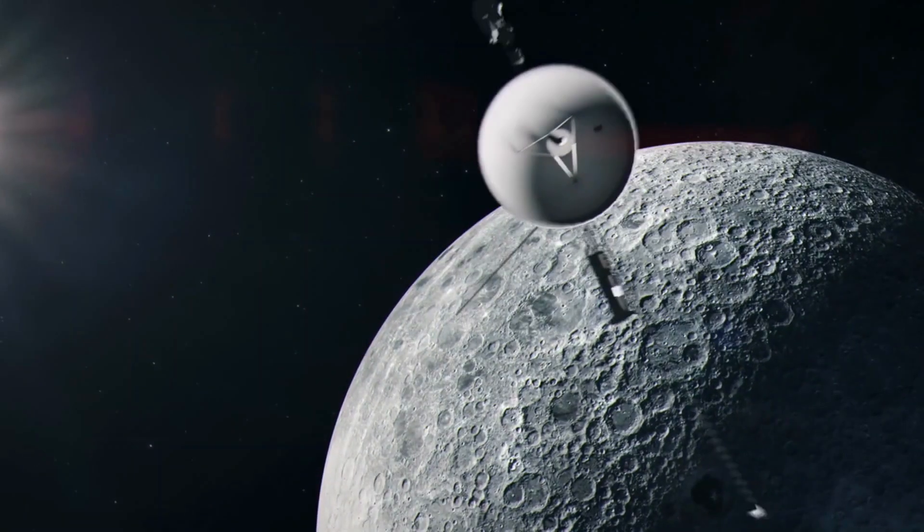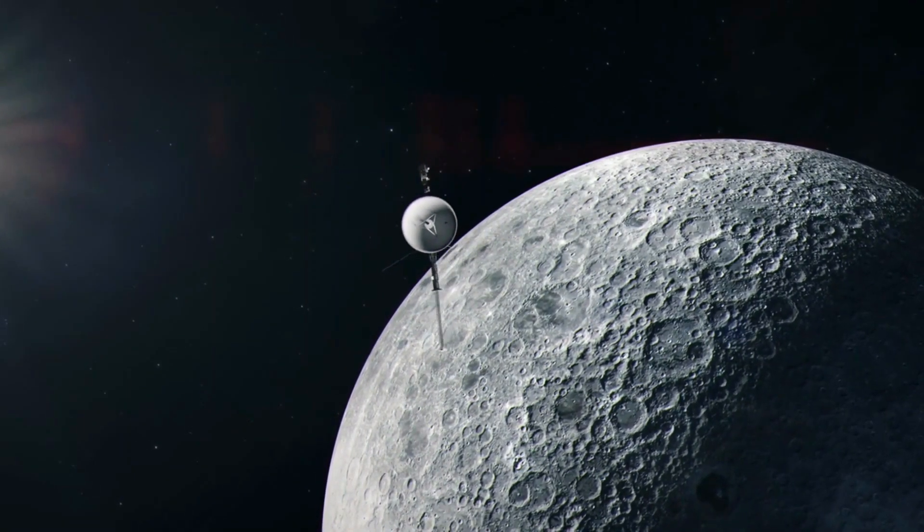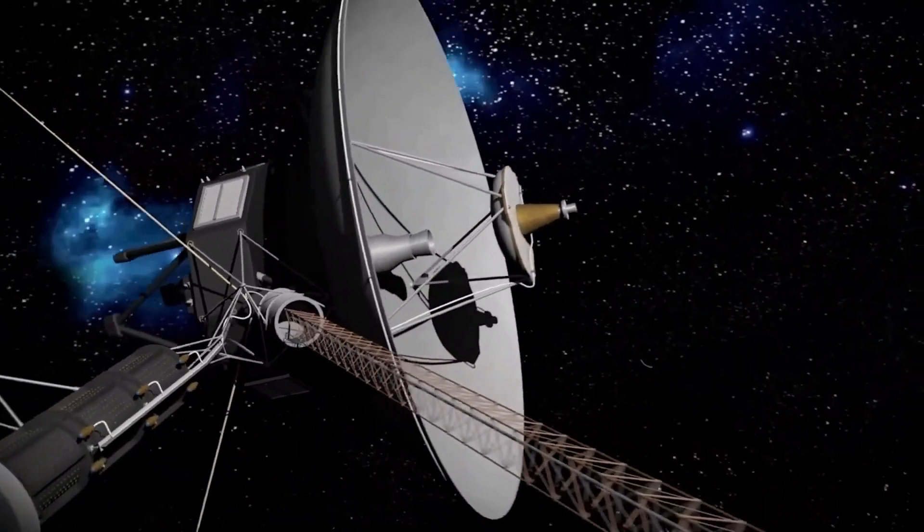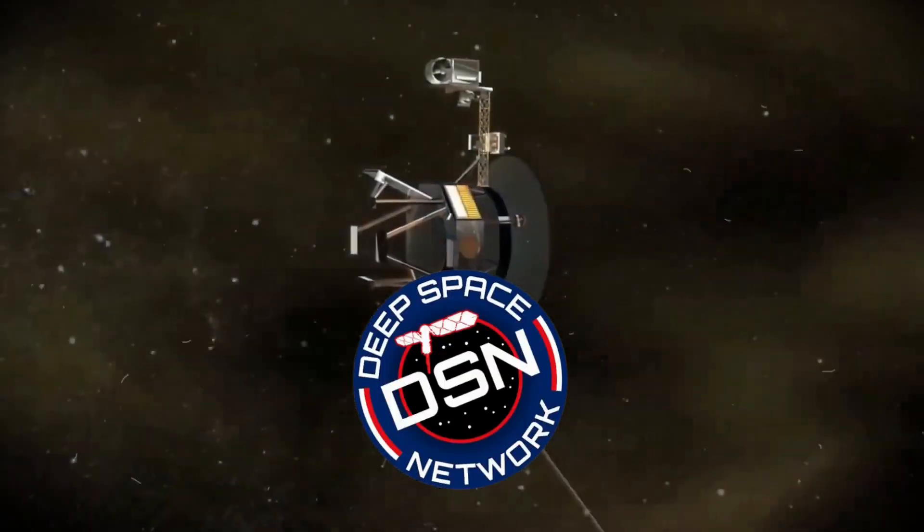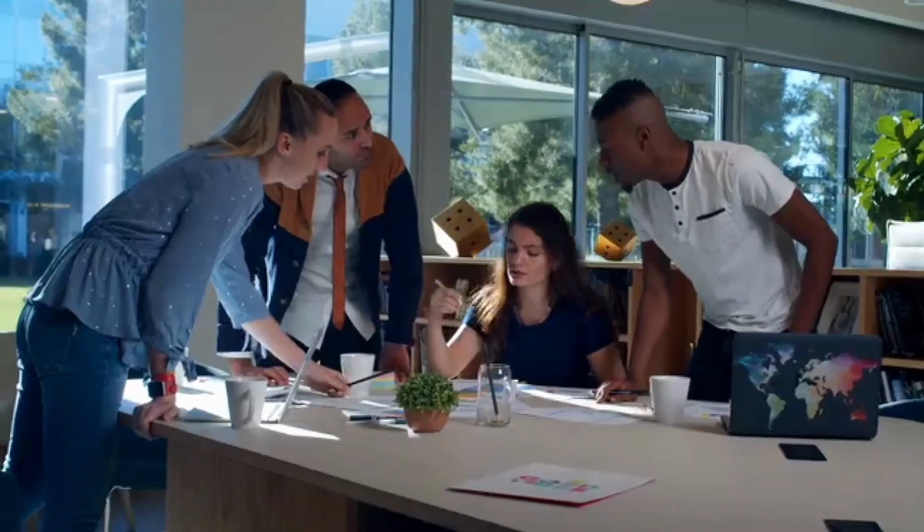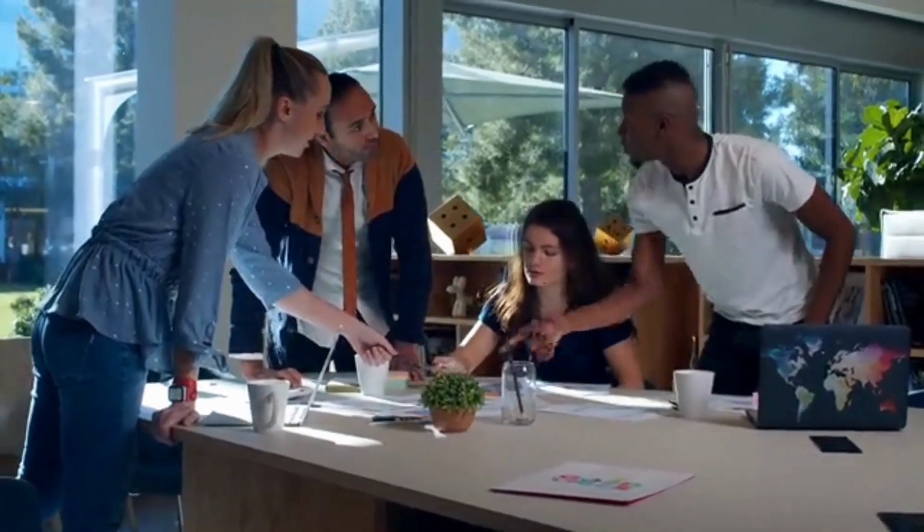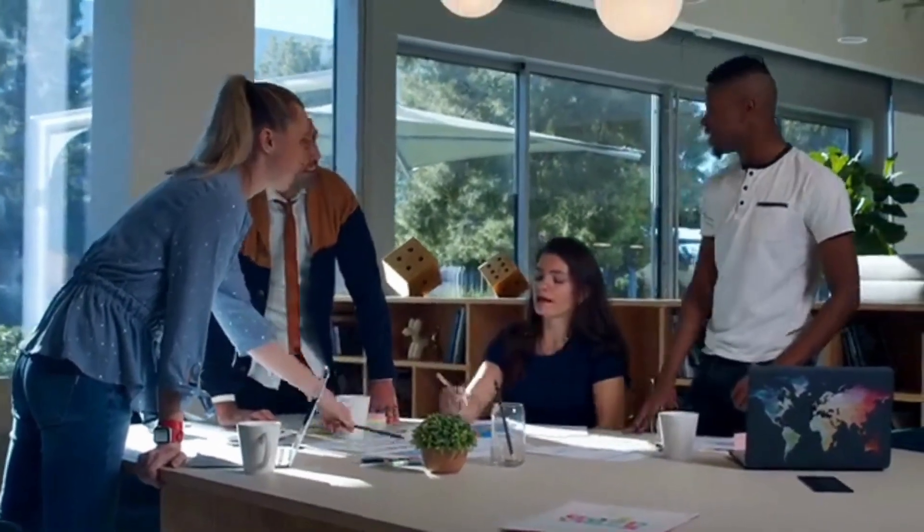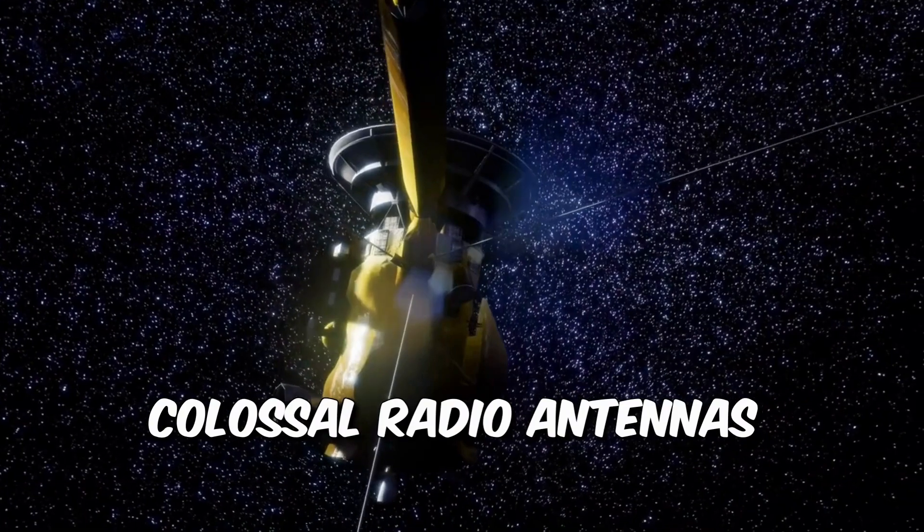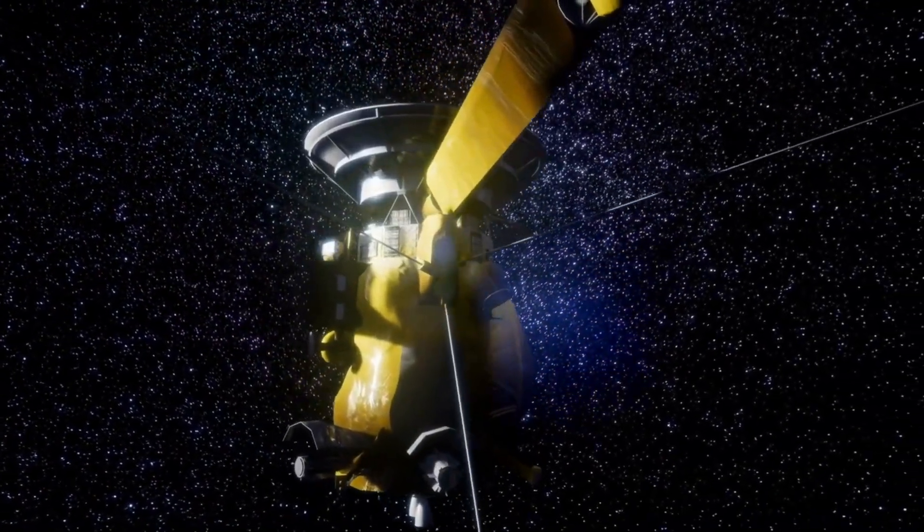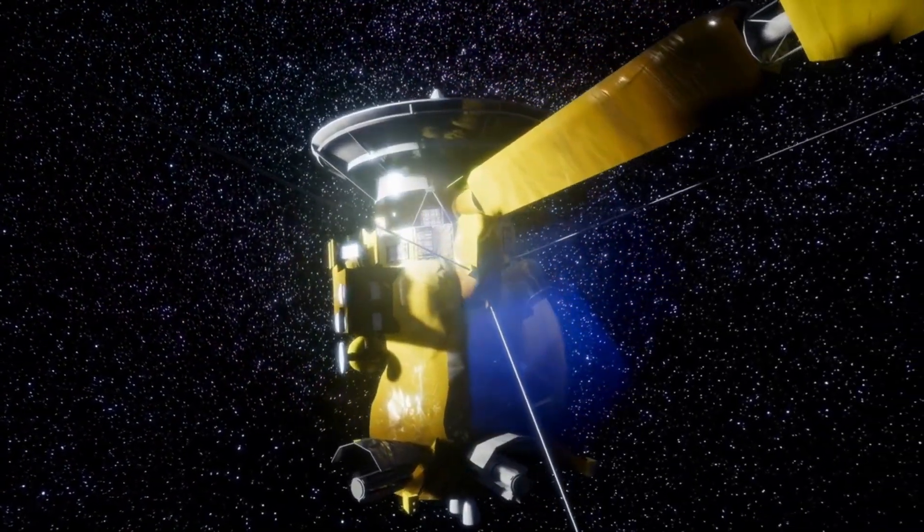When Voyager 1 sends its data from the deep reaches of our solar system, NASA's Deep Space Network, DSN, plays a vital role. Think of the DSN as a global team of high-tech communicators. They use colossal radio antennas strategically placed around the world to chat with our spacecraft out there, exploring the cosmic wonders.